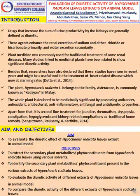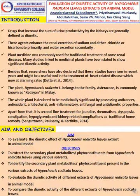The selected plant, Hypochaeris radicata, belongs to the family Asteraceae and is commonly known as katun in Malay. The whole plant is declared to be medicinally significant by possessing anti-cancer, anti-oxidant, antibacterial, anti-inflammatory, anti-fungal, and anti-diuretic properties.